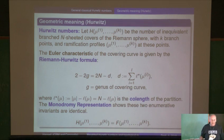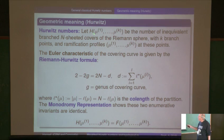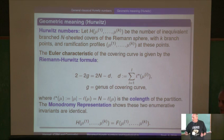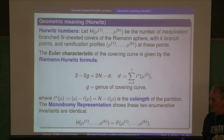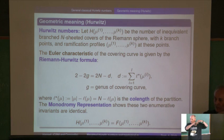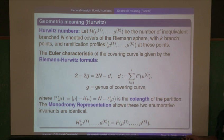There's another meaning which actually preceded it — the original meaning due to Hurwitz — which is the same object. I'm calling it H here because it has a different definition, but the punchline is that the two numbers are the same: F and H. This enumerates branched covers of the Riemann sphere with k branch points, in which the ramification profile of the branch points is given by the partition, telling you how many sheets are collapsing into a single point.